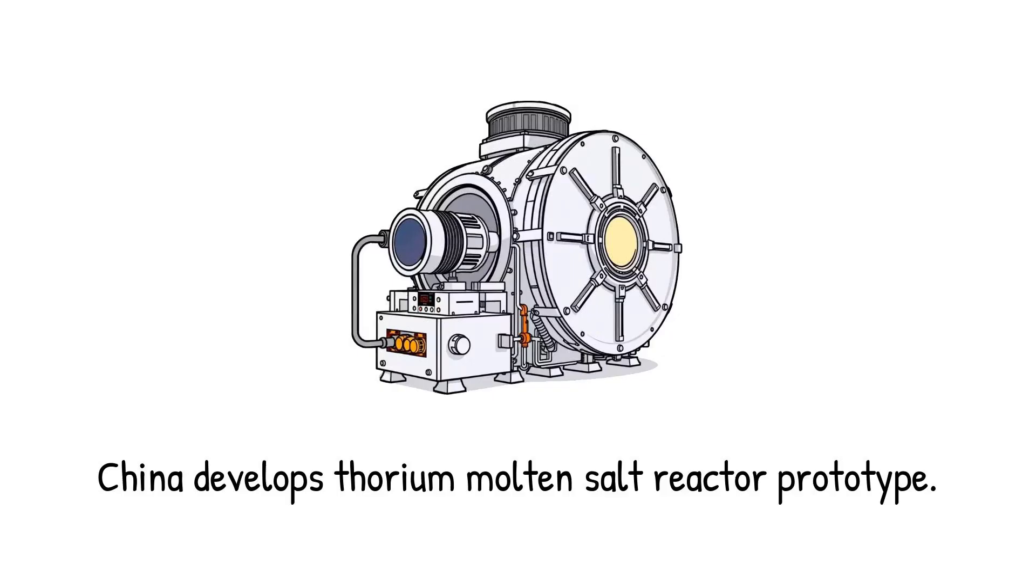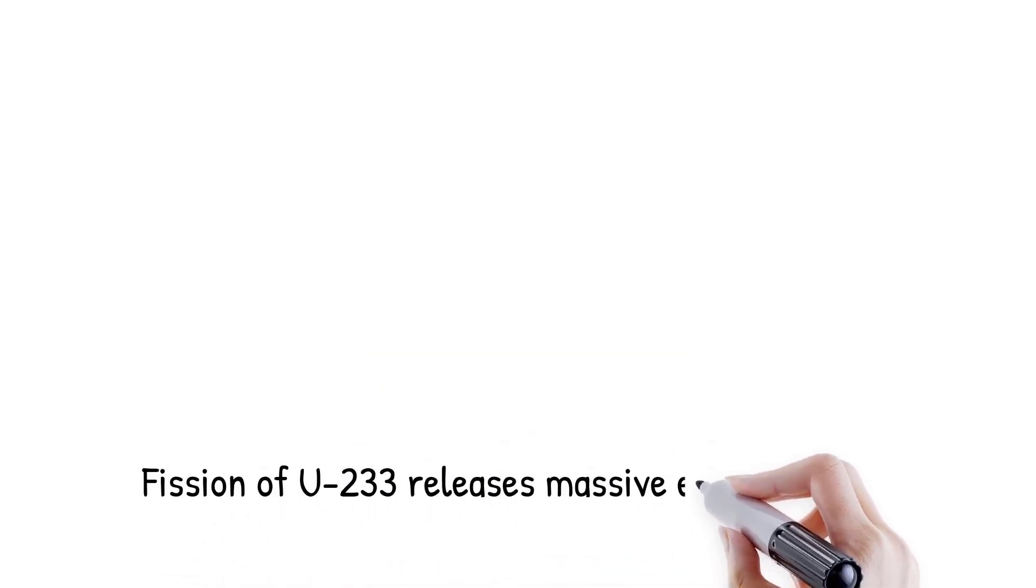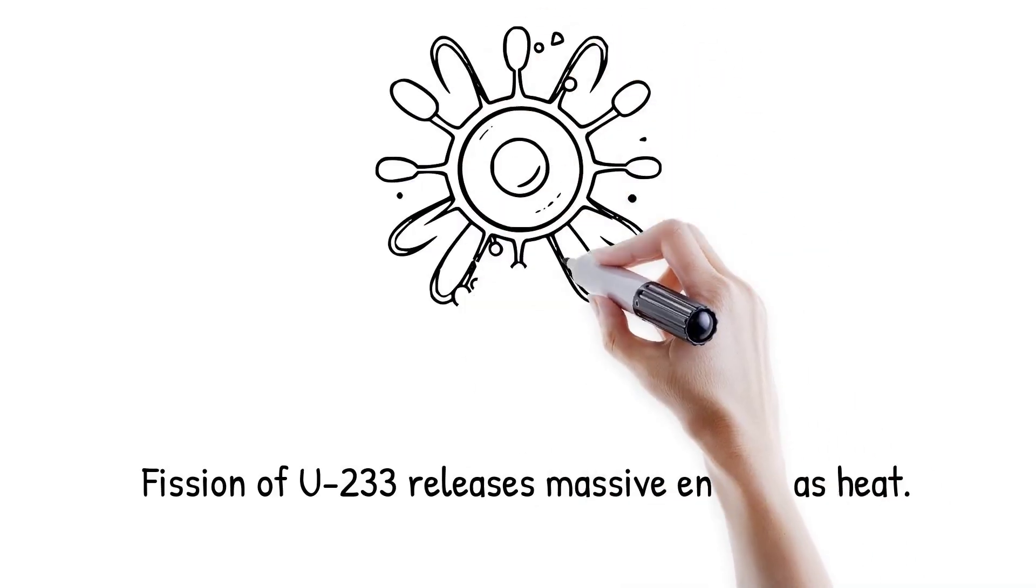For example, China has been developing a thorium molten salt reactor prototype in Wuwei, Gansu Province. Analogy: choosing a thorium reactor is like picking the right type of engine, diesel, electric, or hybrid, each suited to different goals.